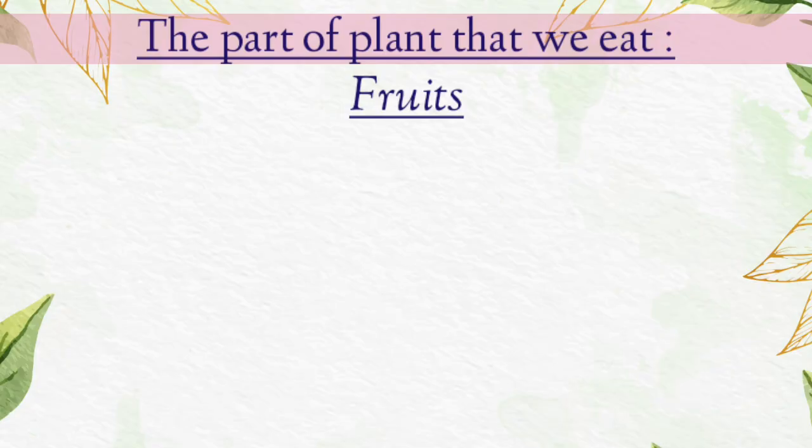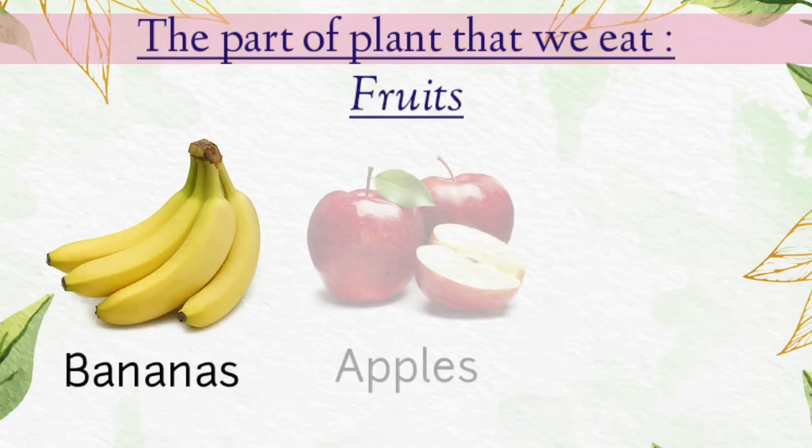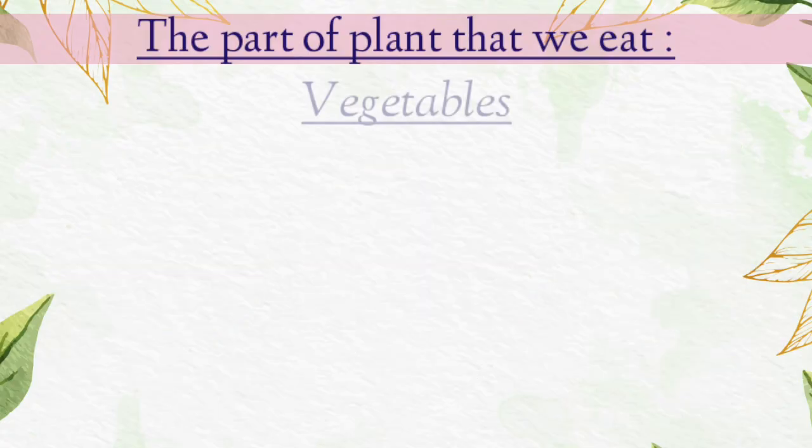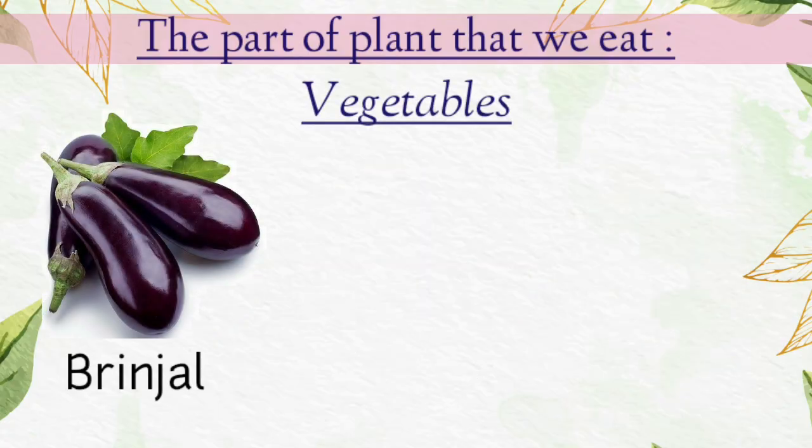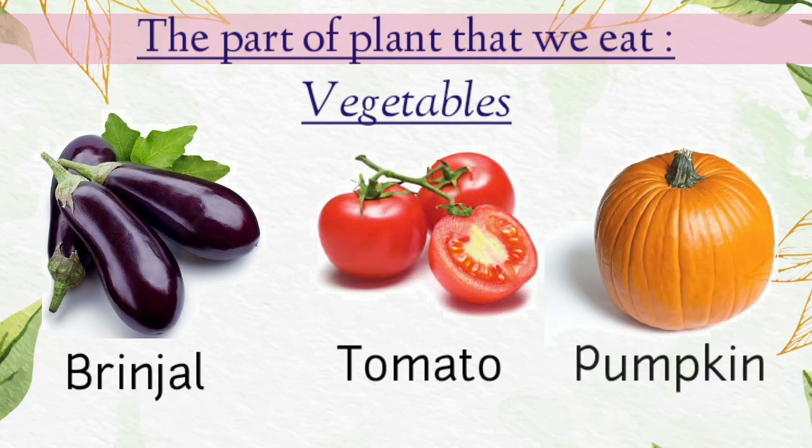Fruits. The parts of plant that we mainly eat are fruits. We eat them as vegetables and fruits. Fruits such as bananas, apples, mangoes and some vegetables such as brinjal, tomato, pumpkin are eaten as fruits.